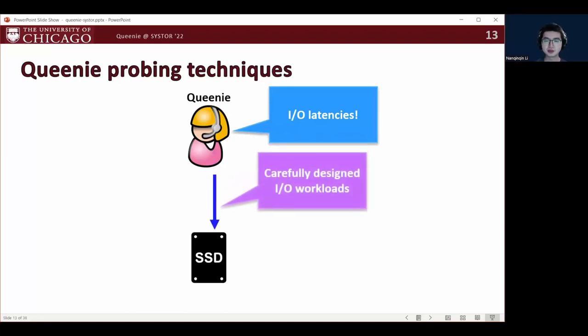So for each property, QINI designs a special workload that isolates a specific internal activity relevant to this property. For example, if we want to probe the right buffer size, then we need a workload that only triggers buffer flush. Then QINI issues this workload to the SSD and collects the latencies to observe how the SSD reacts to the special workload.